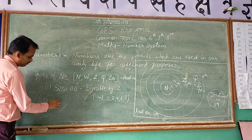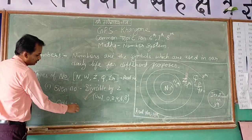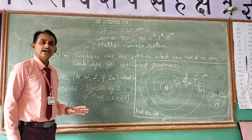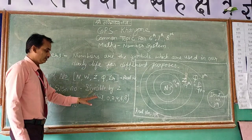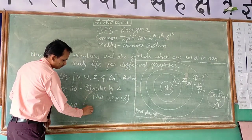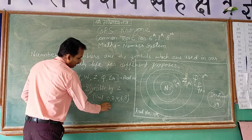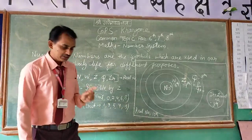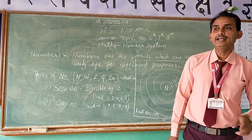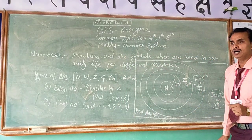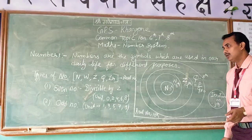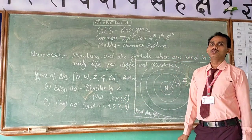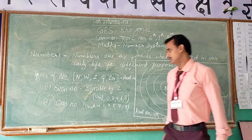Next, after even numbers, we have odd numbers — just the opposite of even. If numbers are not divisible by 2, they are known as odd numbers. Their units place has digits 1, 3, 5, 7, or 9. Numbers which have 1, 3, 5, 7, or 9 on the units place are known as odd numbers, and numbers with 0, 2, 4, 6, or 8 on the units place are even numbers.